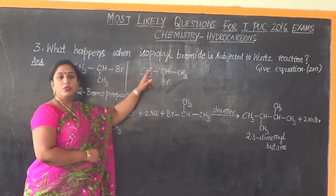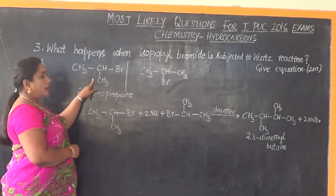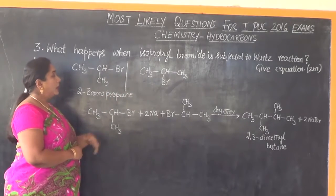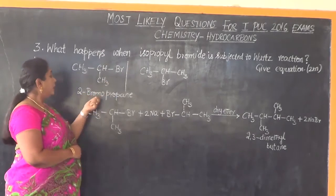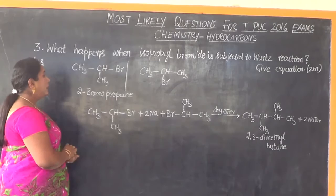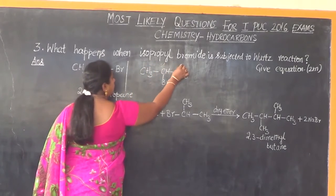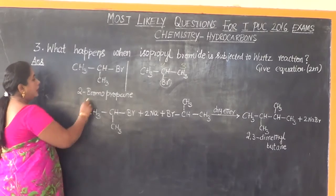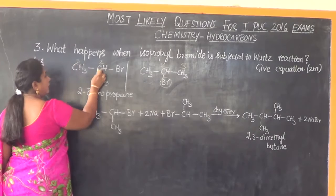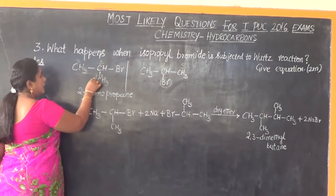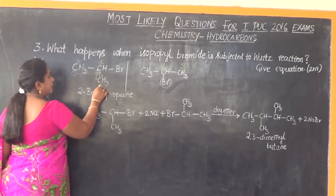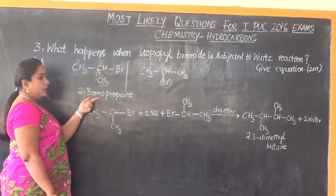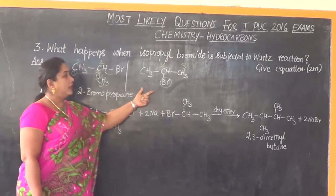First, let us write the structure of isopropyl bromide. Either structural representation can be used — both represent isopropyl bromide. Isopropyl bromide is the trivial nomenclature; its IUPAC name is 2-bromopropane. From the structure you can see that the halogen bromine is attached to the second carbon atom. Whether you number from one end or the other, the carbon bearing bromine will always get the locant 2, so it is called 2-bromopropane.